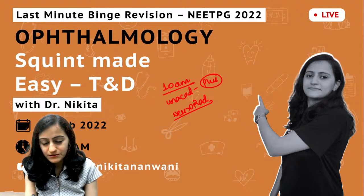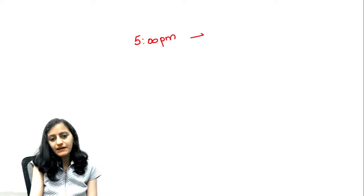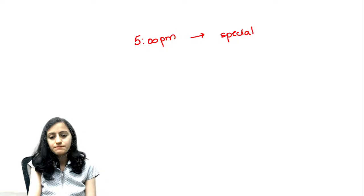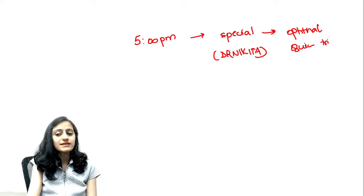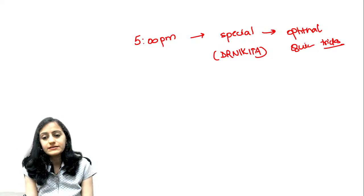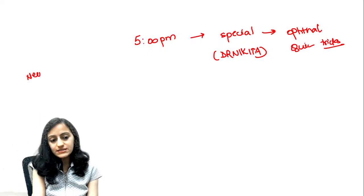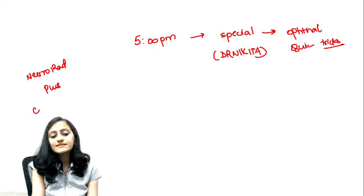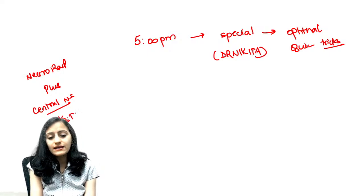The neuroradiology class is for Plus subscribers — 10 to 12 and 1 to 3. For everyone else, the rest of the plan for the day is a 5 p.m. special class on the Unacademy app; unlock code is 'Dr. Nikita.' At 5 p.m. we'll discuss ophthalmology — a quiz with tricks and easy mnemonics, like we had for ENT yesterday. The neuroradiology course is in the Plus course on the central nervous system. I'll share the link on the Telegram group just before starting.